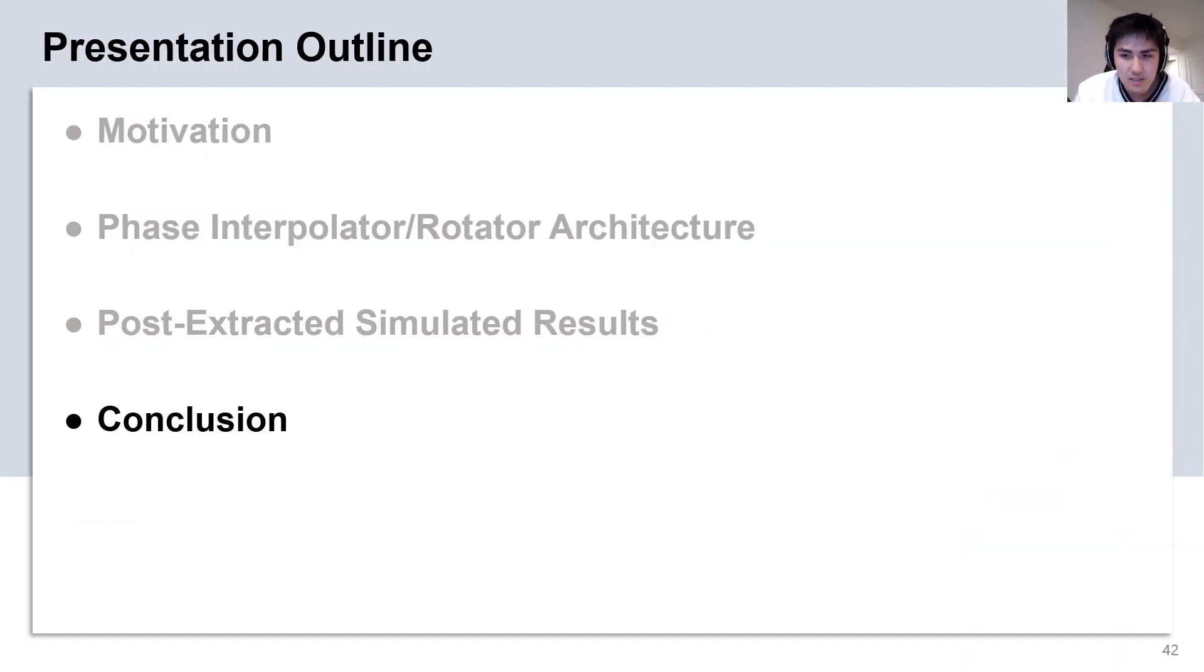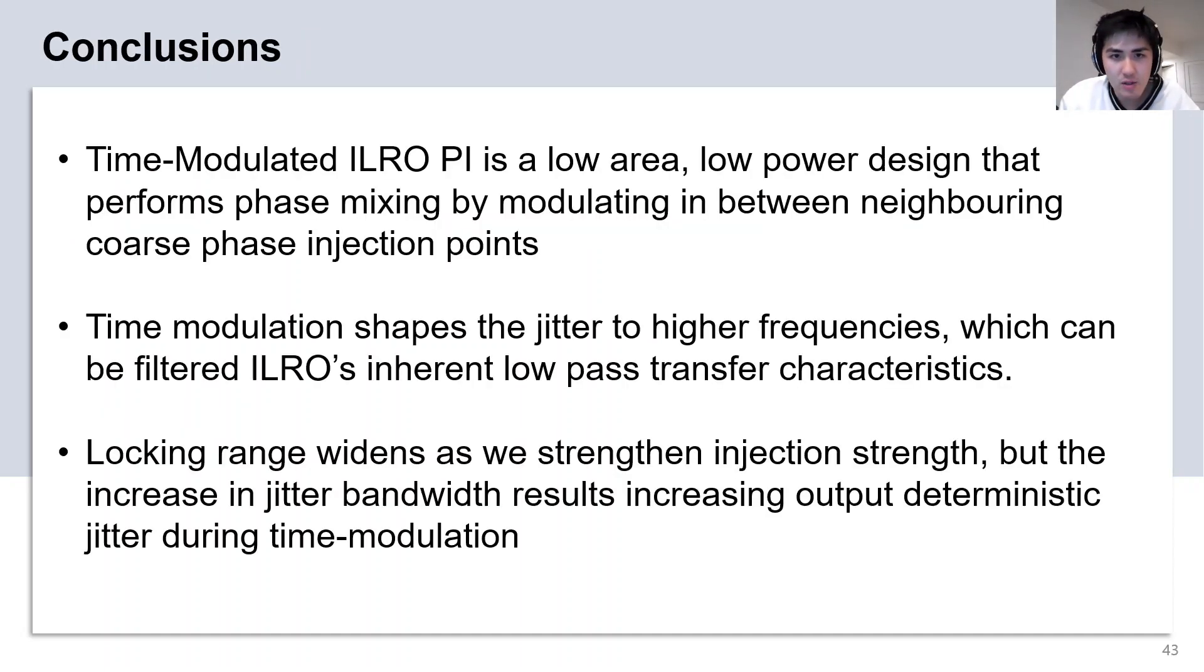Finally, I would like to conclude my presentation. Time-modulated ILO-based PI is a low-area, low-power design that performs phase mixing by modulating in between neighboring coarse phase injection points. Time modulation shapes the jitter to higher frequencies which can then be filtered by the ILO's inherent low-pass jitter transfer characteristics. The locking range widens as we strengthen the injection strength, but the increase in jitter bandwidth results in increasing output deterministic jitter during time modulation.